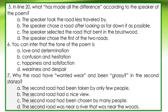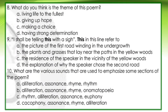Question 7: Why did the road have 'wanted wear' and been grassy in the second stanza? A. The second road had been taken by only few people. B. The second road had a nice view. C. The second road had been chosen by many people. D. The second road was near a river that was near the woods. Question 8: What do you think is the theme of this poem? A. Living life to the fullest. B. Giving up hope. C. Making a choice. D. Having strong determination.